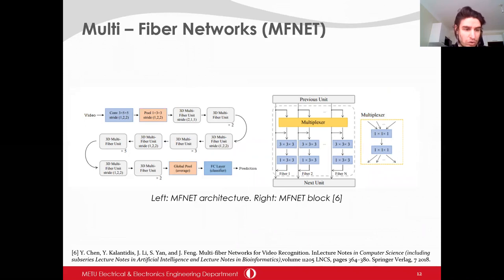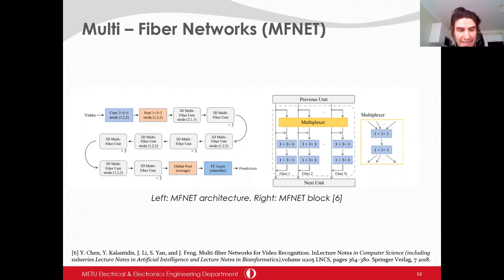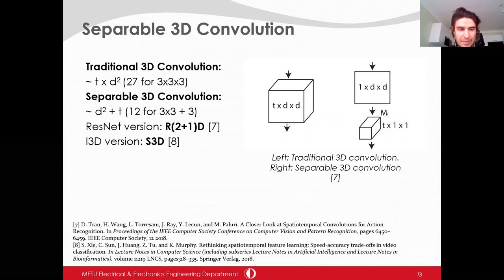Multifiber Networks (MFNet) also utilize group convolution and is a type of ResNet architecture. MFNet applies pointwise convolutions only before the group convolution, not after it, to reduce computational burden. This special pointwise block is called the multiplexer. It also reduces the number of channels of ResNet architecture. You can think of MFNet as the MobileNet of action recognition in terms of number of parameters — it is a lightweight version. In separable 3D convolution, spatial and temporal convolutions are implemented separately, which decreases computational complexity and number of parameters. In the literature, the ResNet version is known as R2+1D and the I3D version is known as S3D.